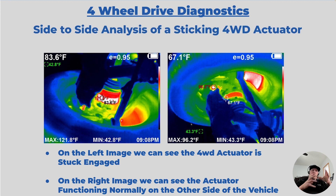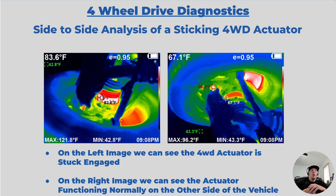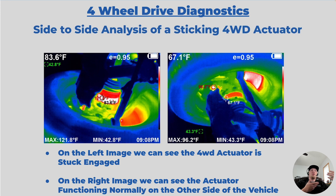Here is an example of a four-wheel drive system behaving abnormally. This particular vehicle had a front left axle that was not disengaging when the vehicle was switched into two-wheel drive mode. If we look at the left-hand image versus the right-hand image, that white-hot area on the left where the crosshair shows up versus the red area on the right shows a greater amount of heat buildup on the left-hand axle. This means we've got a four-wheel drive actuator that is not fully disengaging — in other words, it's dragging. This could lead to noise, binding, and other issues.